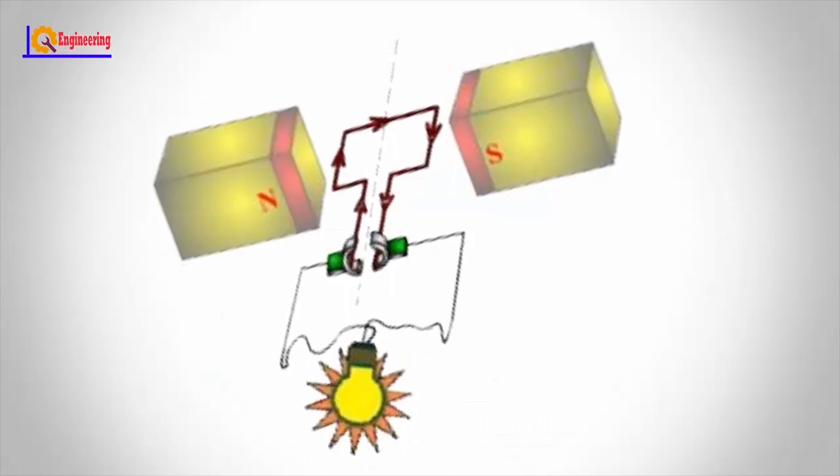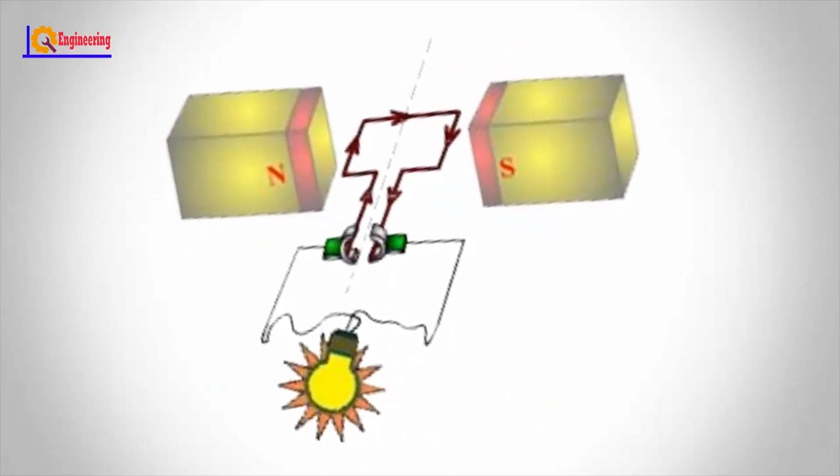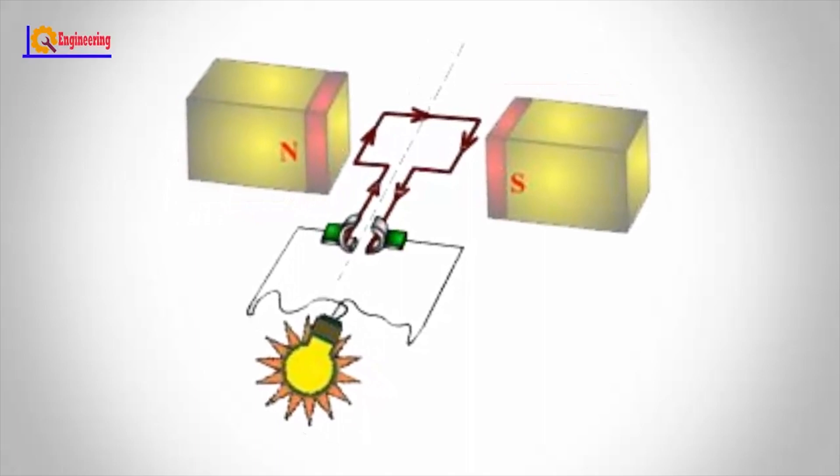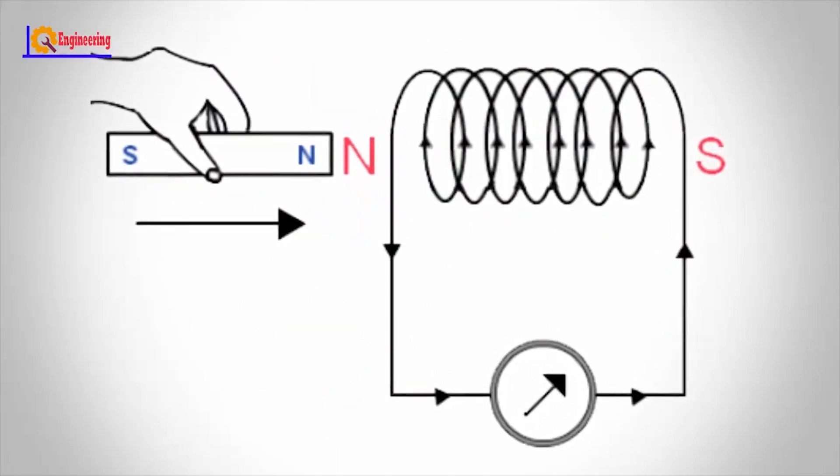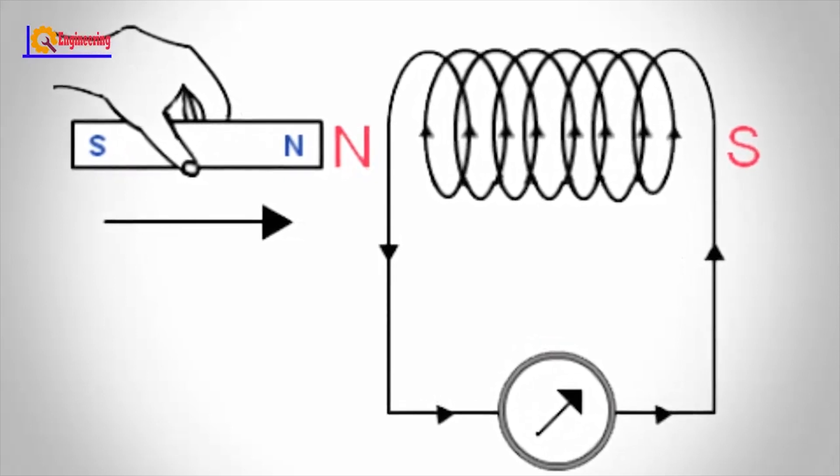The DC generator produces direct current or direct power at the output. DC generator is based on the basic concept of Faraday's law of electromagnetic induction.